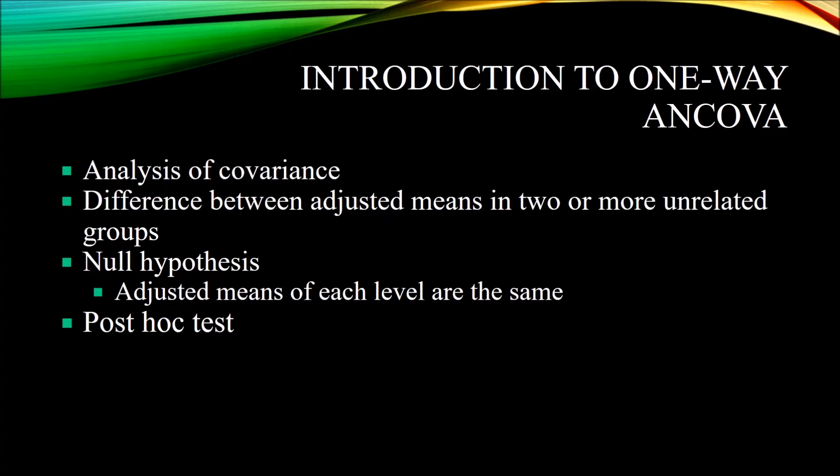The null hypothesis for one-way ANCOVA is that the adjusted means of each level are the same, as opposed to the one-way ANOVA null hypothesis, which is that the means at each level are the same. So in the ANCOVA, the means are adjusted, and those adjusted means are examined for differences.